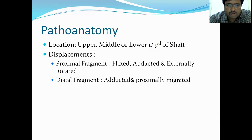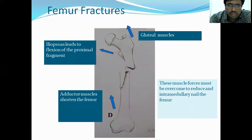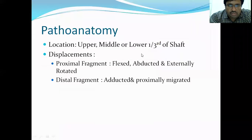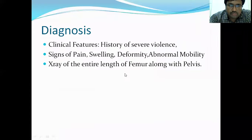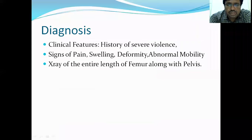There are three displacements of the proximal fragment: the proximal fragment goes into abduction, external rotation, or flexion — these are the three deformities present in the proximal fragment. The distal fragment goes into adduction deformity, as well as proximal migration due to the pull of the muscles.